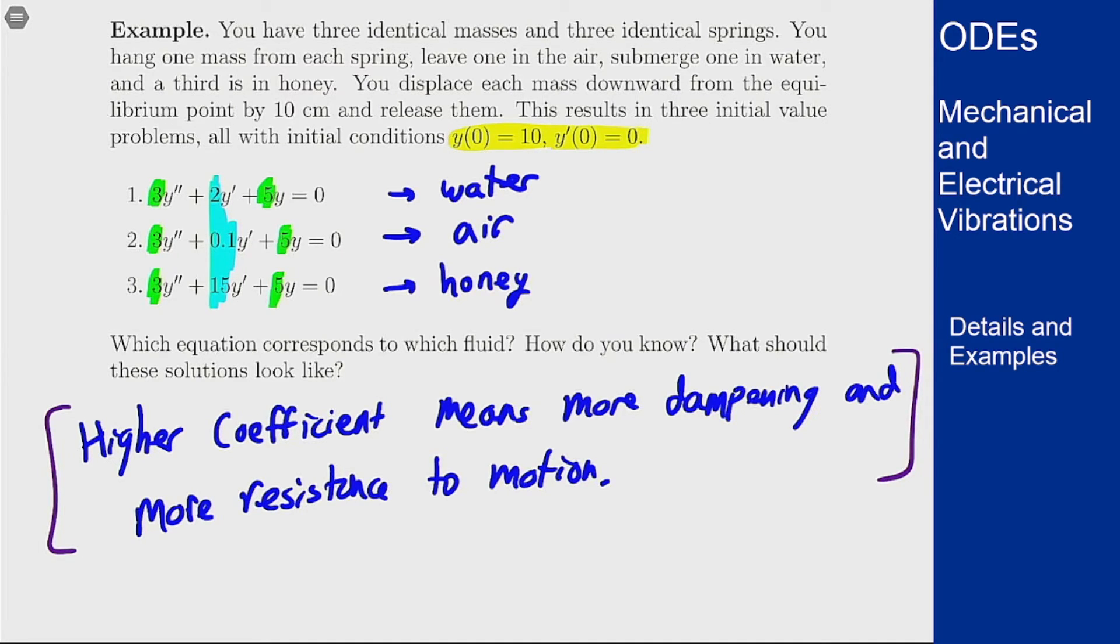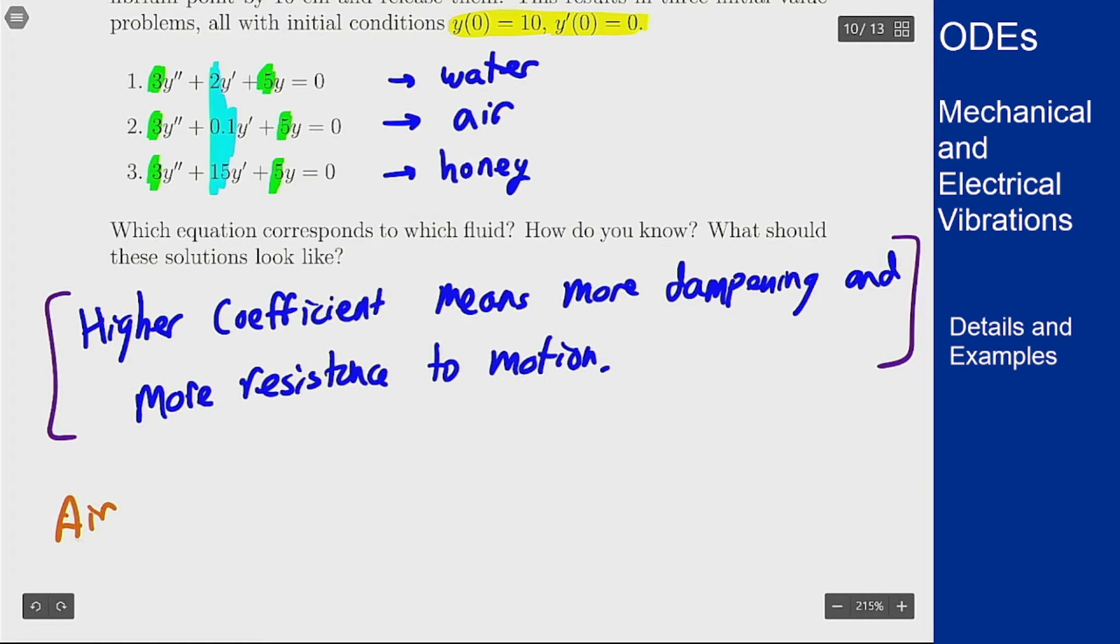Well for that I want to look at are these over, under, or critically damped and see how that behaves. So for air we see that b squared minus 4ac is 0.1 squared or 0.01 minus 4ac is 60, and that's not going to change for the different components. That's going to be the same no matter what because it's mass times spring constant.